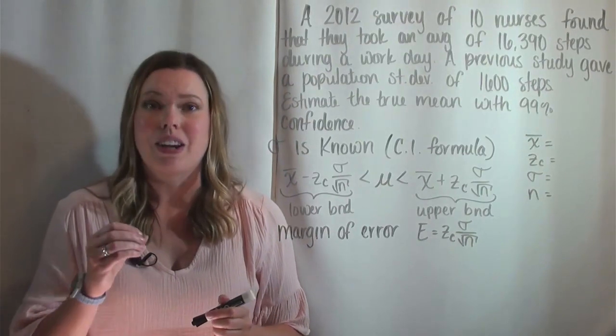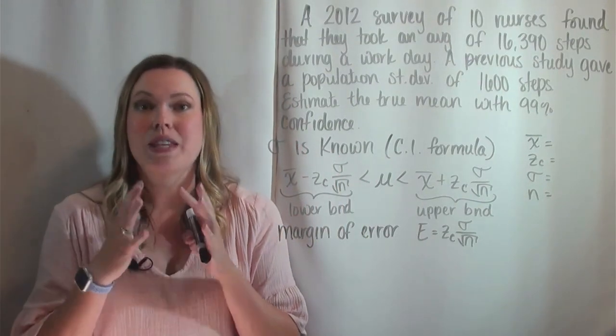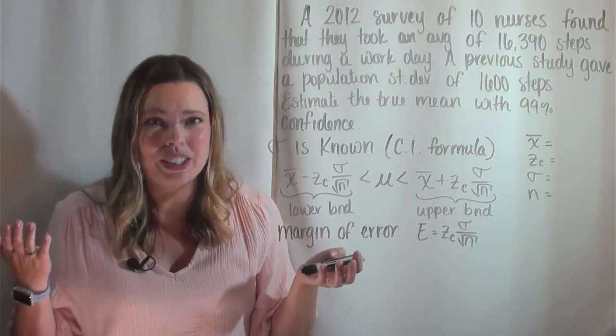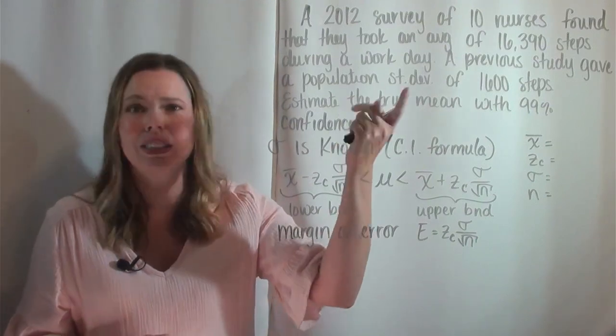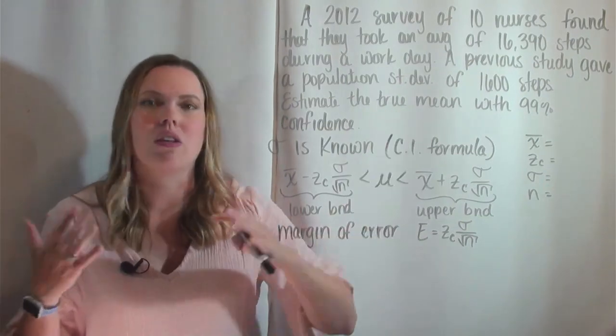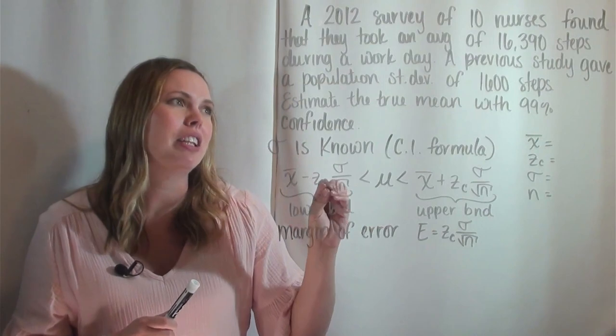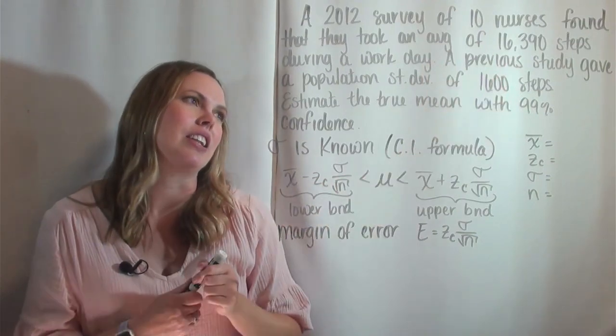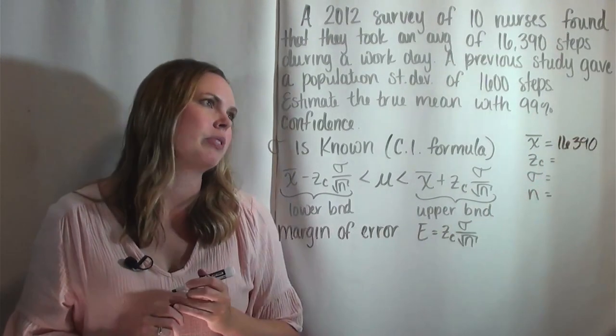So x̄ is also an average, but it's the average of a sample. So you have the population, which is everybody, and then you survey a sample. So here we are just surveying 10 nurses. So we know this is not the population of all nurses. That would be our understood population here would be all nurses. But we only surveyed 10 of them. And so we're going to use that data to estimate the true mean or the population of all nurses, how many steps they take per day. So our x̄, our average of a sample is the average of these 10 nurses, which is telling me right here that they take an average of 16,390 steps. So that is my x̄.